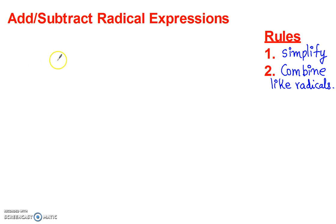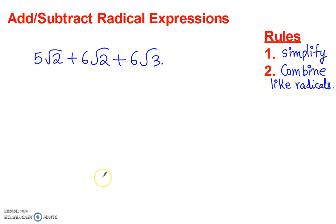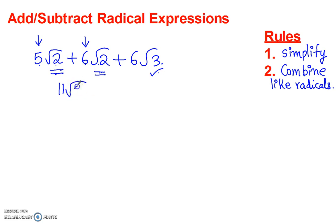I'm going to explain rule number 2 first. If you have a question like this, what I mean by combine like radicals is you can only combine radicals of the same type. Here the first two terms have radical 2, and the last term is radical 3 — a different type. So these two are the same type, and you're only going to add the coefficients: 5 plus 6 is 11, radical 2, plus 6 radical 3.